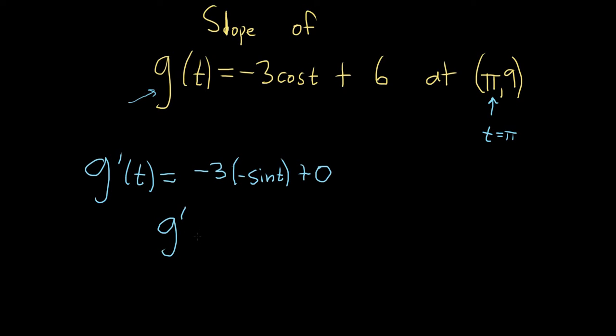Let's go ahead and rewrite this. So g prime of t is equal to 3 sine t. So this will give us the slope on the graph of this function at any value of t.